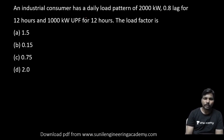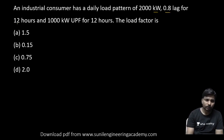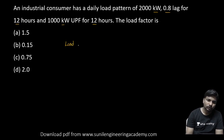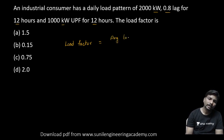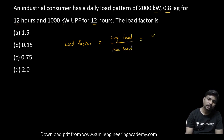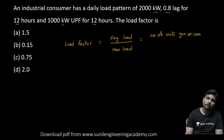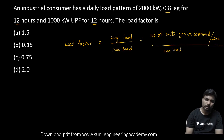Coming to the next question: an industrial consumer has a daily load pattern of 2000 kilowatt at 0.8 power factor lagging for 12 hours, and 1000 kilowatt for 12 hours. What is the load factor? Students, all of you try yourself first, then check with my answer. Load factor is always associated with load and is less than one. Average load is in the numerator, maximum load in the denominator. Average load means number of units consumed for a specified time period.